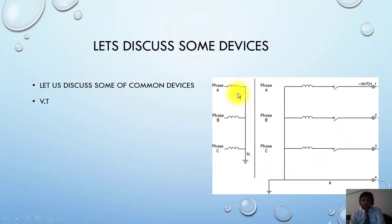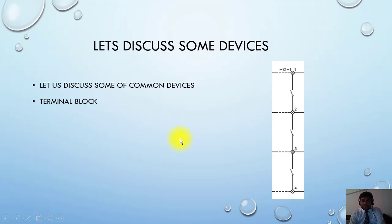This is the symbol of VT, and you can notice here the terminal block is also named as XDVT21. So this is the symbol of VT. Again, very common - you must know this is the symbol of terminal block. The terminal blocks are available in the panel. This is the symbol of how it will be shown.